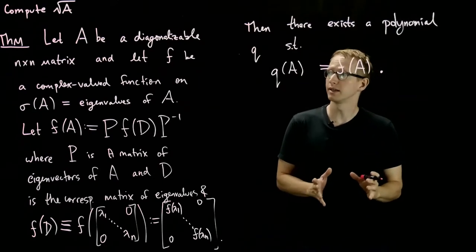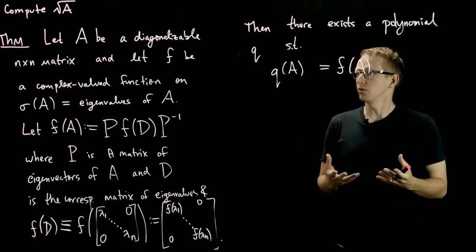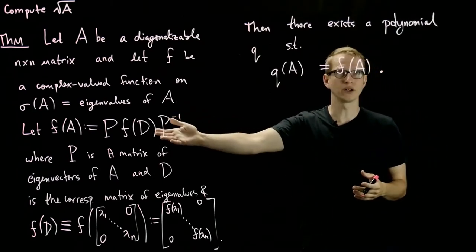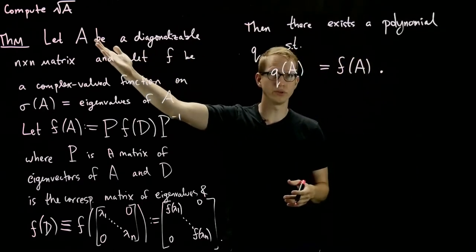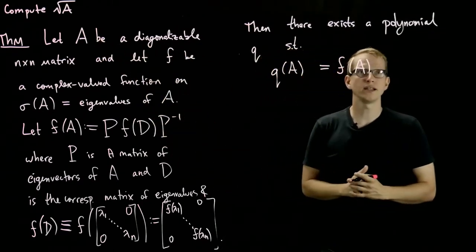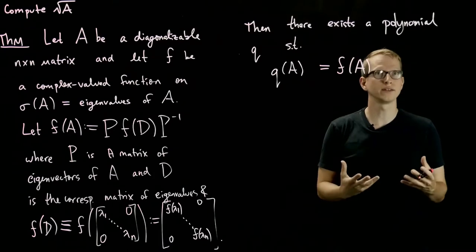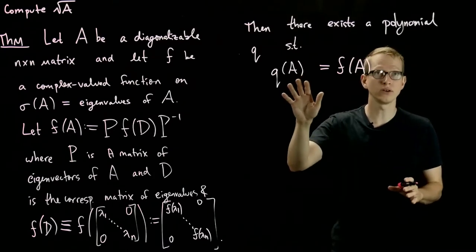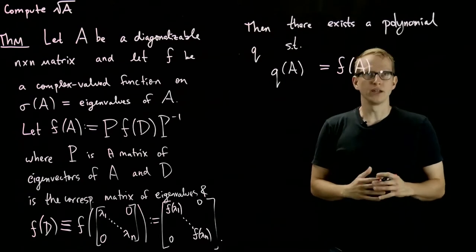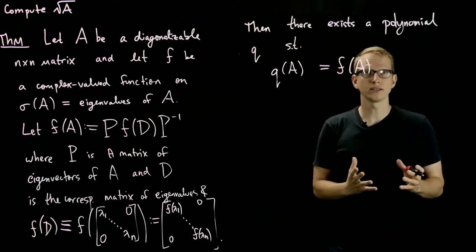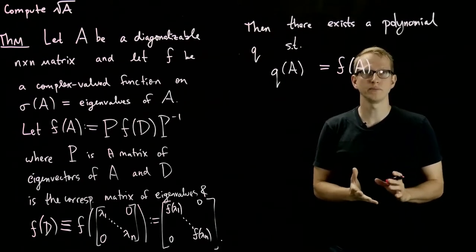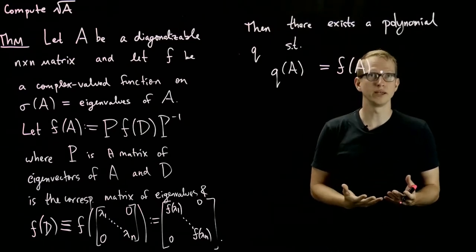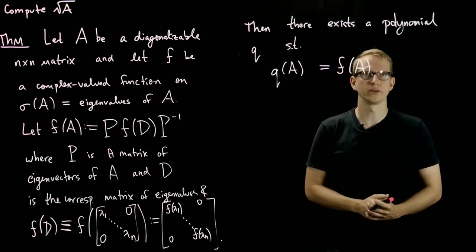And it's very surprising, because in general, you can think of a very strange function, such as the square root. And this is telling you that there is a way to write the square root of that given matrix in terms of a single polynomial. And what we're going to do first is do this through a simple example and illustrate it with that simple 2×2 matrix, and then we'll prove the general theorem.